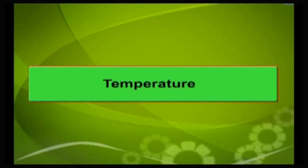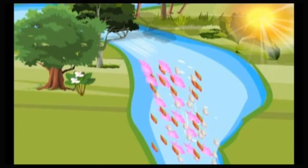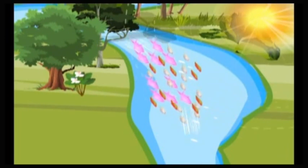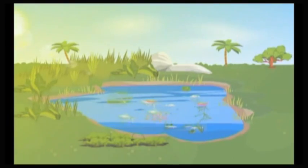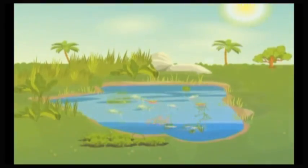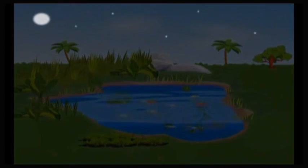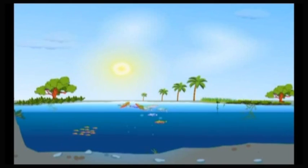Temperature is another factor that affects life in aquatic habitat. Temperature influences the rate of biochemical reactions and physiological processes. In small ponds and lakes which are not very deep, the shallow water gets heated up during daytime and cools down during night. In deeper lakes, only the surface water is heated up while the deeper layers remain cold.